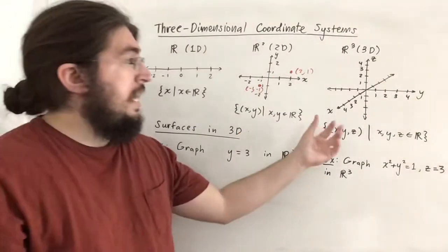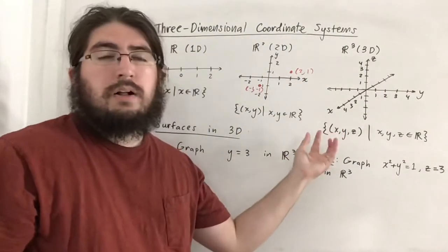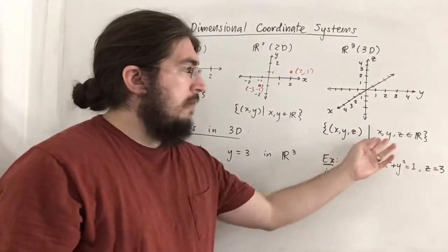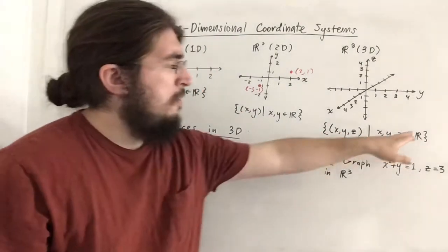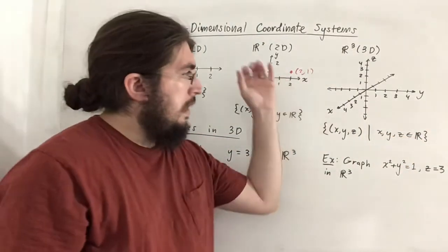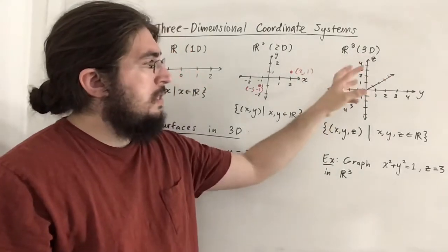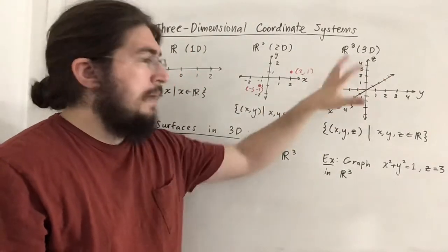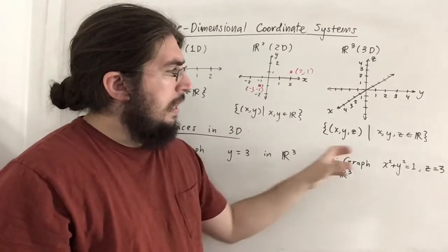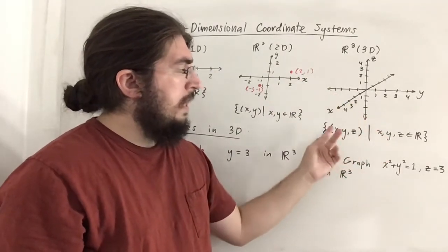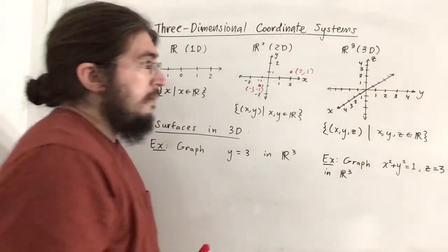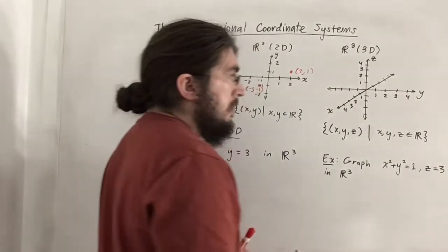An element in R³ is called an ordered triple — x, y, z — where x, y, and z are real numbers. Any point in three-dimensional space, in R³, is a point x comma y comma z where x, y, and z are real numbers. So for example if I were to plot 3 comma negative 1 comma 2 — let me do this in red so we can see it better — x is 3, y is negative 1.